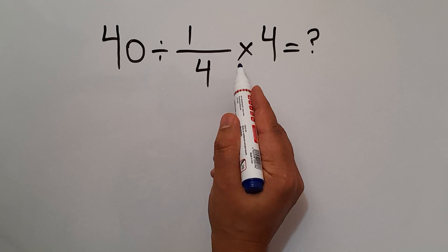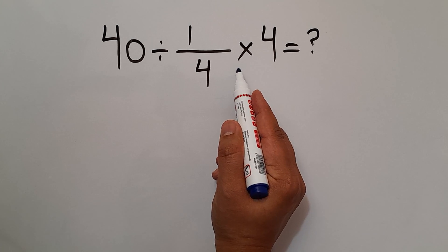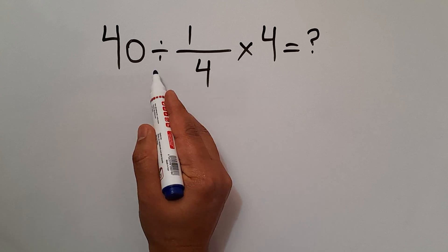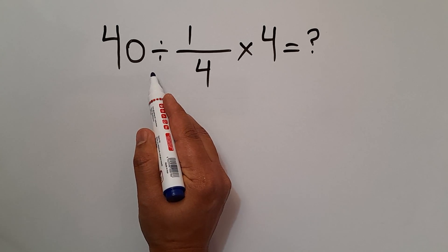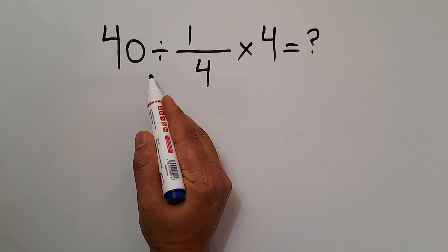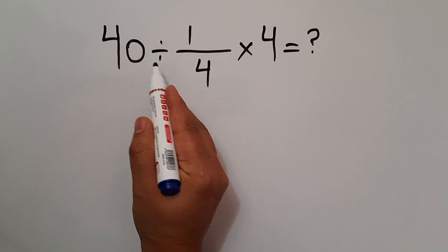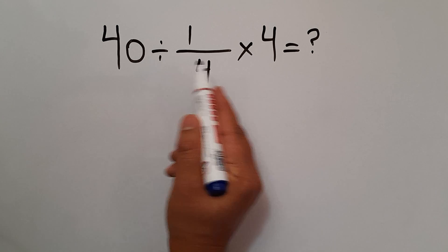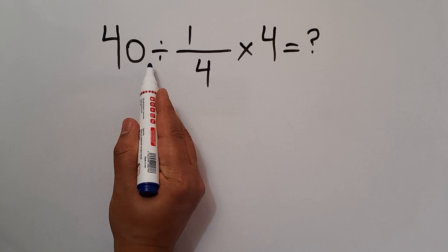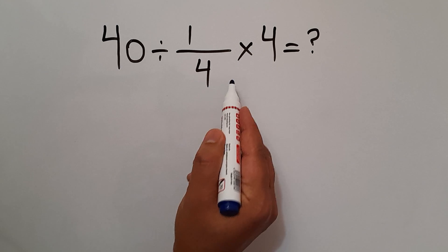As we know, according to the order of operations, multiplication and division have equal priority and we have to work from left to right. So first this division, and then this multiplication: 40 divided by 1 over 4.